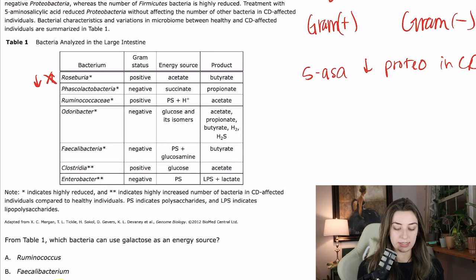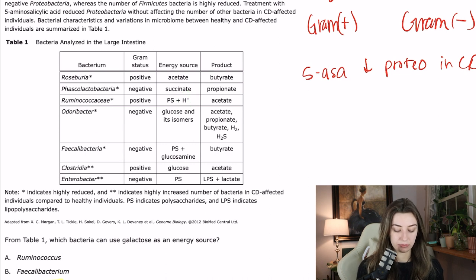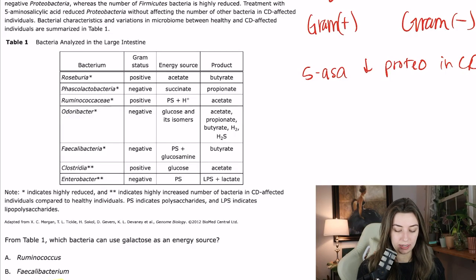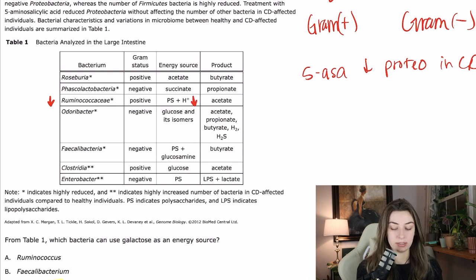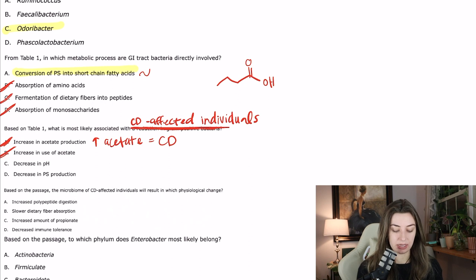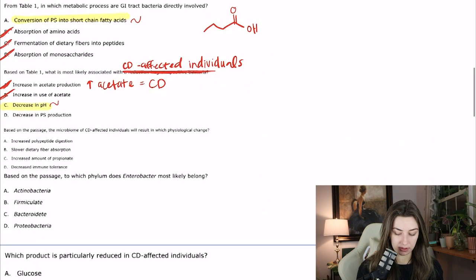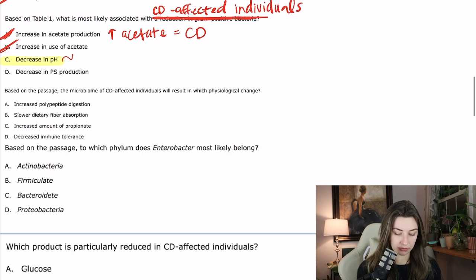C says a decrease in pH. The only thing related to pH is a proton, which is a reactant for ruminococcus. Ruminococcus has one star — it's decreased in CD-affected individuals. So we are going to be using fewer protons, meaning more protons remain, which decreases pH. We are going to see a decrease in pH in CD-affected individuals because they don't have as much of this bacteria. D says a decrease in PS production — none of the bacteria they looked at are PS producers, so that's off the wall. The answer is C.